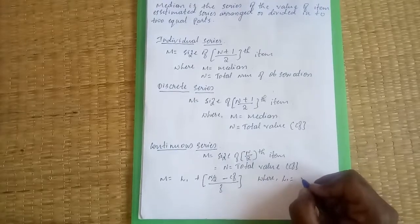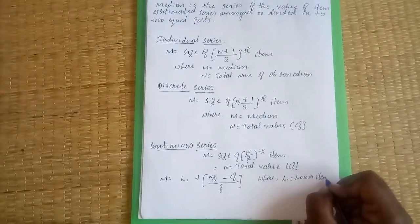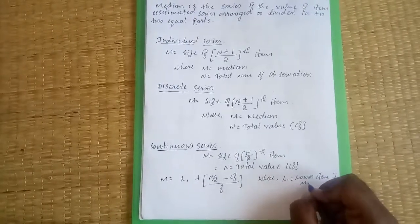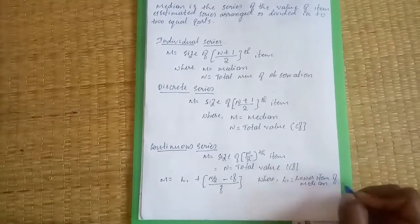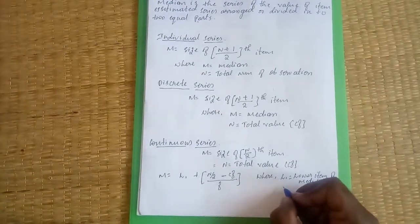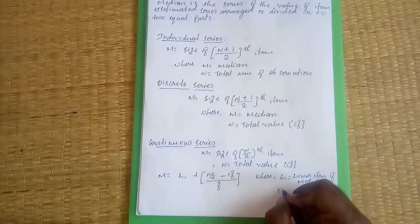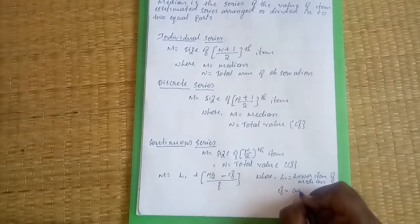n equals total number of observations. CF equals cumulative frequency - cumulative frequency.